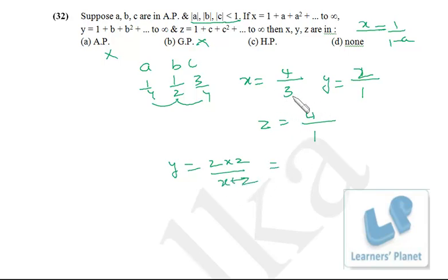So 2xz. 2 into 4 by 3 into 4 upon 4 by 3 plus 4. Let's see this.